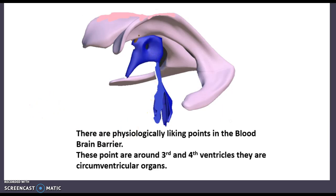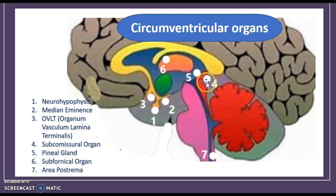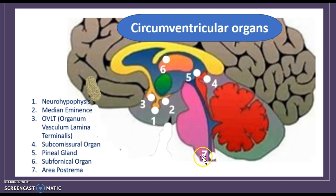There are seven landmarks in these areas called the circumventricular organs. There is the neurohypophysis, the median eminence, the OVLT, the subcommissural organ, the pineal gland, the subfornical organ, and the area postrema.